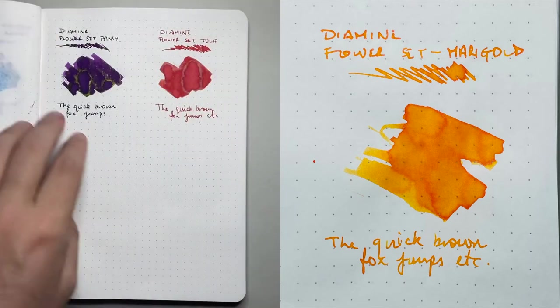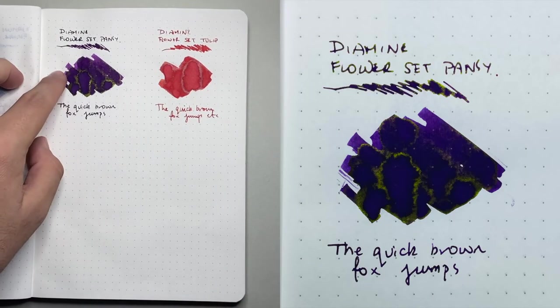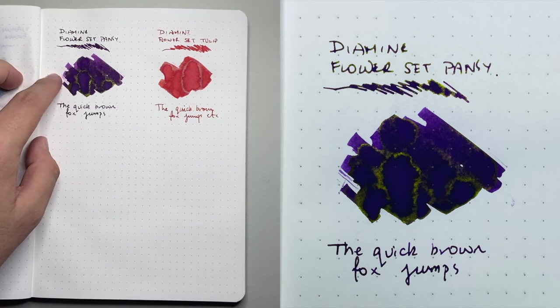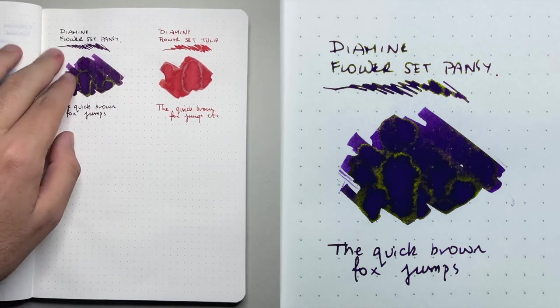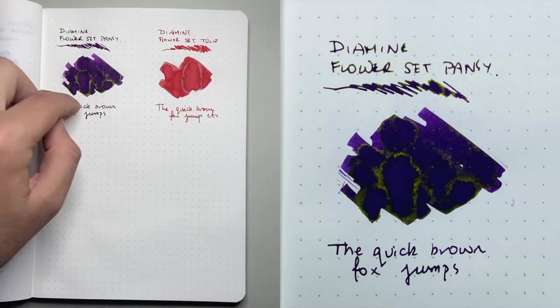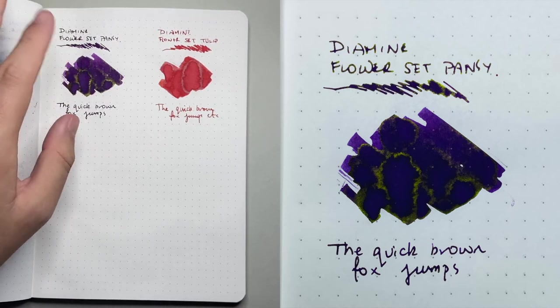And then the final two inks in this set are Pansy, which is a nice dusty dark purple with beautiful gold sheen. Really lovely ink, actually. Beautiful color, beautiful performance. Yeah, really lovely.